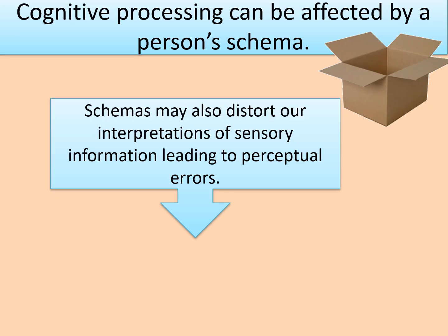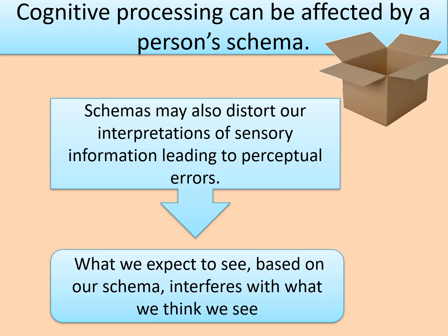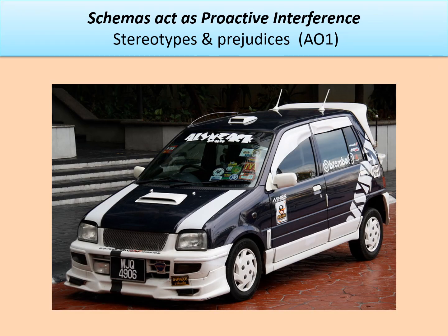Cognitive processing can be affected by a person's schema, meaning you can process information cognitively very quickly. However, another important thing is that schemas can distort our interpretations of sensory information, leading to perceptual errors. What we expect to see based on our schema interferes with what we think we see or what we remember — it can distort your perception and your memory for something. Schemas act as proactive interference: your older, pre-existing memories interfere with, block, or distort your newer memories.